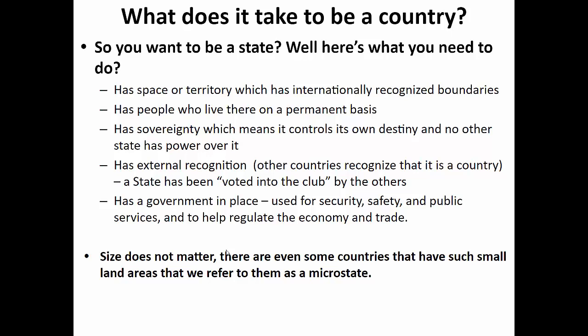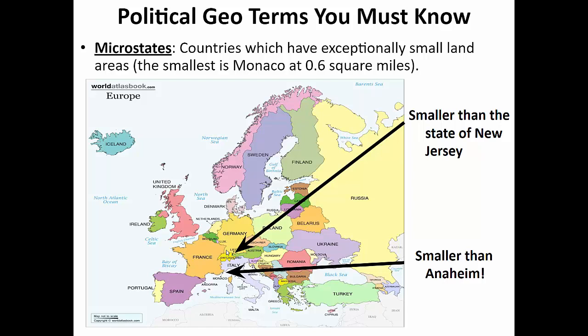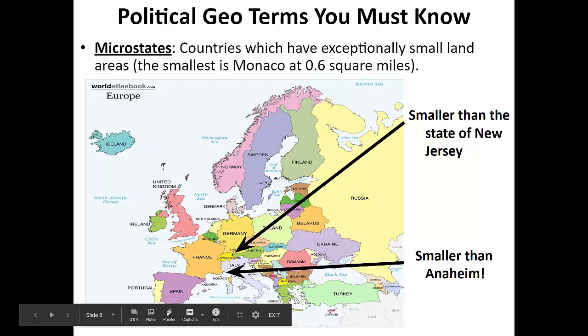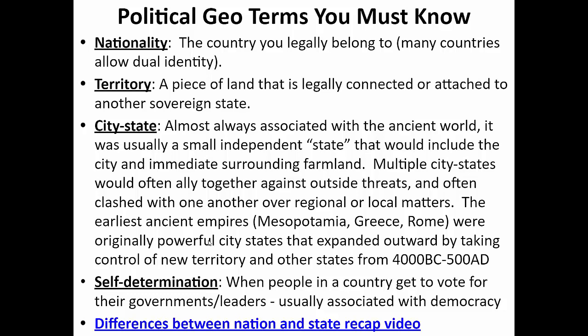Size doesn't matter — some countries have small land areas but are still states because they fit the criteria. We call some of those microstates. A good example in Europe is Liechtenstein, smaller than New Jersey. Monaco, that little state in southern Europe between France and Italy, is actually smaller than Anaheim — only 0.6 square miles — and it's its own country. So again, size doesn't matter; those other requirements do.